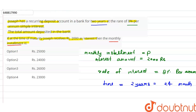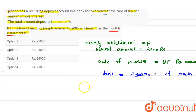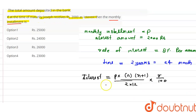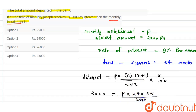To find the monthly installment, we use the formula: Interest equals P into n into (n plus 1) upon 2 into 12, multiplied by r upon 100. Substituting the values: 2000 equals P into 24 into 25 upon 2 into 12, into 8 by 100.